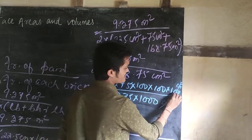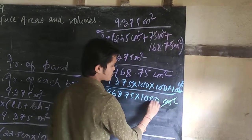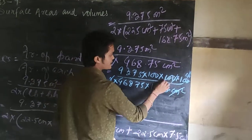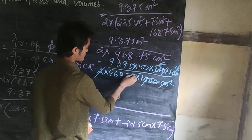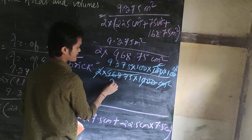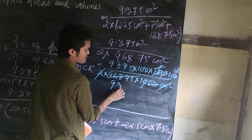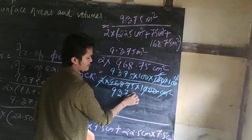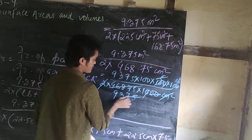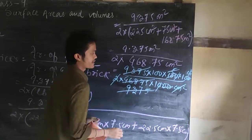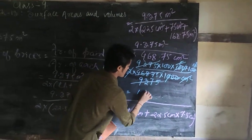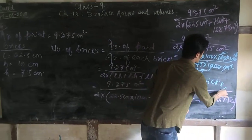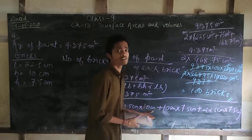After converting and cancelling — centimeters squared cancels with centimeters squared — we simplify the fraction step by step, cancelling common factors. Working through the arithmetic, 100 remains after all cancellations.